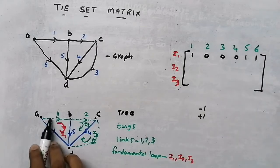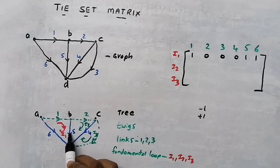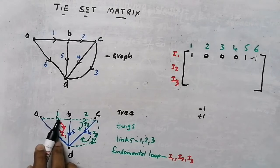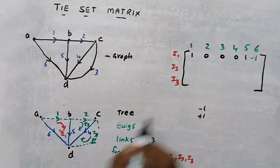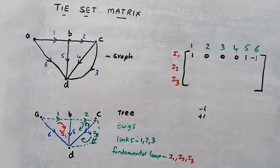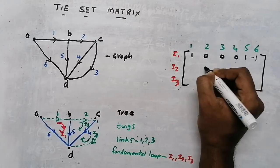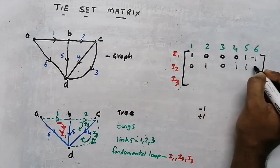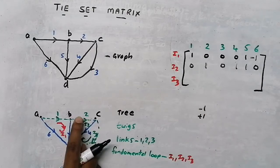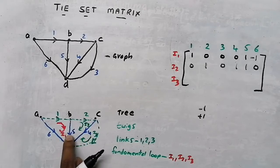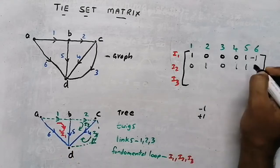Now take the second loop, I2. Which branches are connected? 2, 4 and 5. So near 2, 4 and 5 we put 1; remaining are 0. The direction of the link is clockwise. Branch 2 direction is clockwise and branch 4 is also clockwise, so 2 and 4 are positive. But branch 5 is anticlockwise — opposite to the direction of loop current — so for branch 5 we put negative 1.